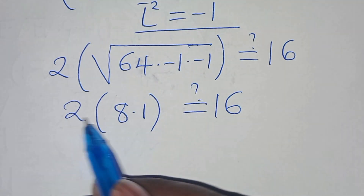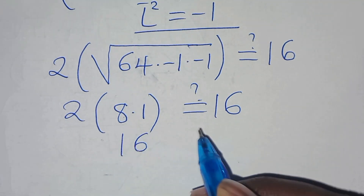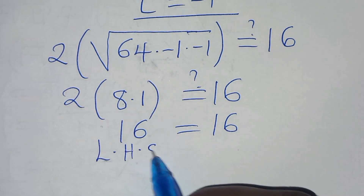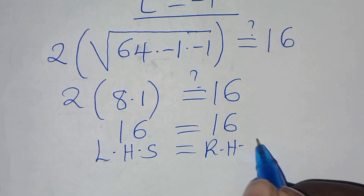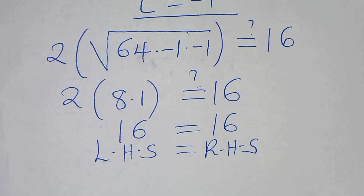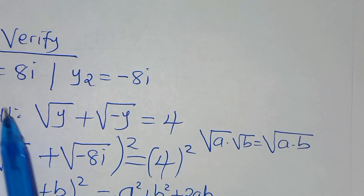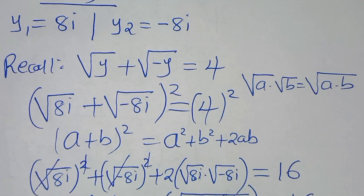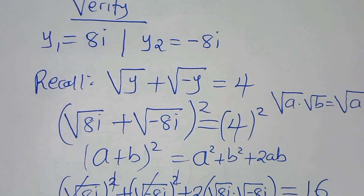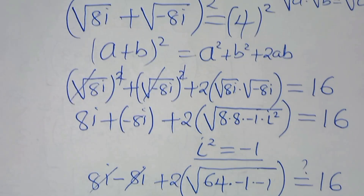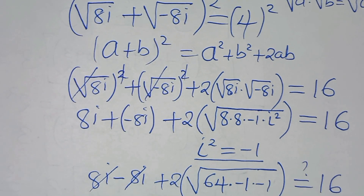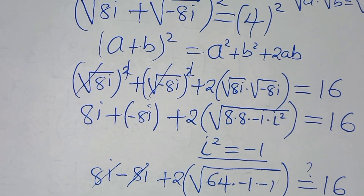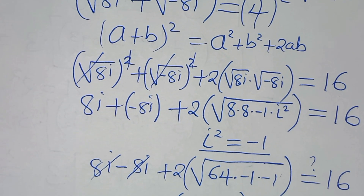We have 8 times 2 equals 16, which equals 16. The left-hand side equals the right-hand side, confirming that both y₁ and y₂ satisfy the equation. Kindly follow the steps, like this video, and subscribe. If you have alternative methods to solve this, don't hesitate to showcase them in the comment section. See you in the next video!